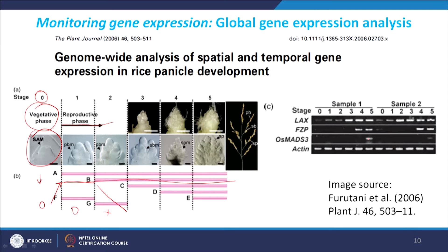For example, some genes have been tested here with RT-PCR analysis. If you see gene LAKS, its expression is very low at stage 0, but across stages 1 through 5 the expression level is increasing. Whereas if you take FGP (frisipanical), the expression starts or activates only from stage 4 onwards and continues into stage 5 — it is not present in the early stages. Whereas MADS3 gets activated at stage 5.